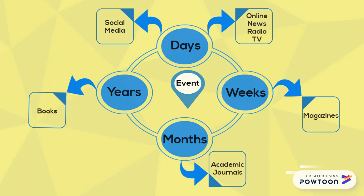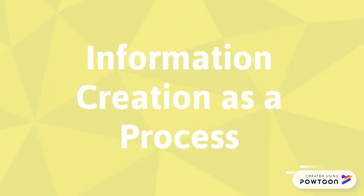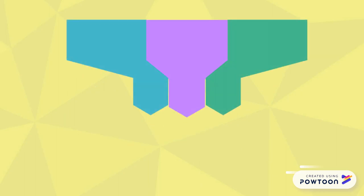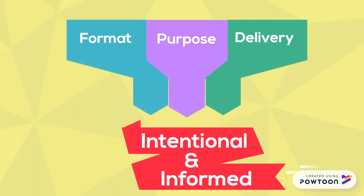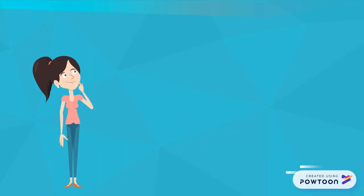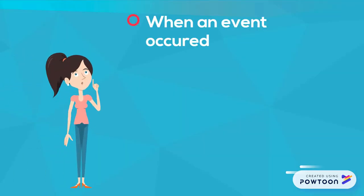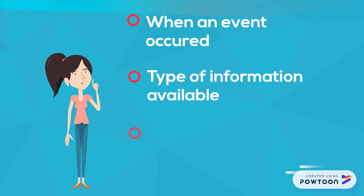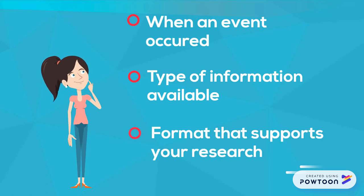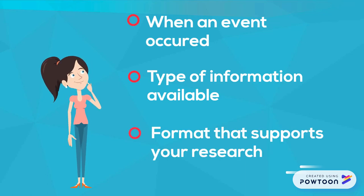The information cycle shows us that research is iterative. Information creation as a process means that the format, purpose, and delivery of information are all intentional and informed by other formats. So when looking for information to support your research, think about when an event occurred, what type of information is available, what format supports your research, and adjust your topic accordingly.